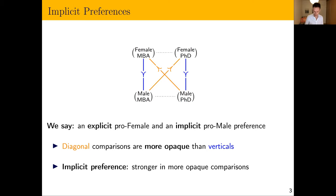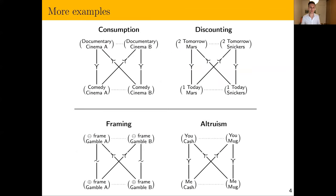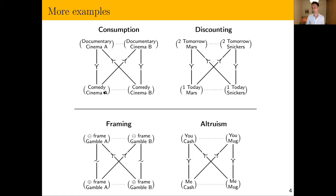This idea is not just about discrimination. We can think about implicit preferences in all kinds of domains. For example, these choices would reveal an implicit preference for comedies with an explicit preference for documentaries, or an implicit preference for consumption today but an explicit preference for patience — choosing to defer consumption to tomorrow.